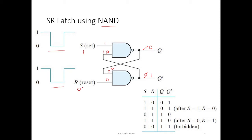Now suppose if we change R from 0 to 1 — instead of 0, we are supplying 1. What happens? This input becomes 1, so 1 and 0 is 0, NOT of 0 is going to be 1, this 1 is supplied here, and this input is already 1, so 1 and 1 is 1, NOT of 1 is going to be 0. You can see that the state of the circuit is retained. I am not changing anything in the output — the circuit is able to retain the information, and the input combination to retain the information is 1 and 1.